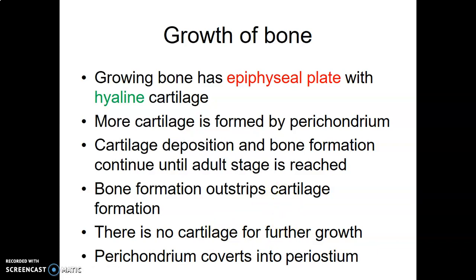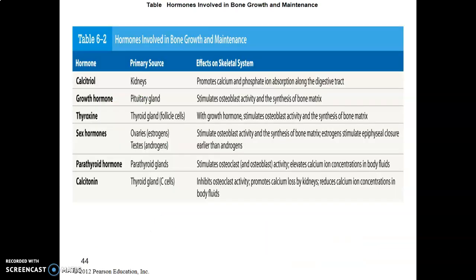In endochondral ossification, the perichondrium converts to periosteum as bone forms from cartilage. The bone grows from the epiphyseal growth plate as cells multiply and hypertrophy. Eventually all cartilage is replaced by bone — bone formation outstrips cartilage formation — and no cartilage remains. The perichondrium is fully converted to periosteum.